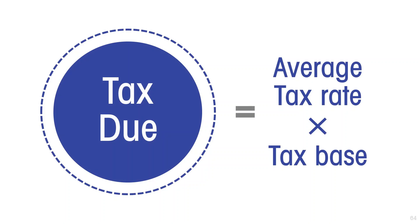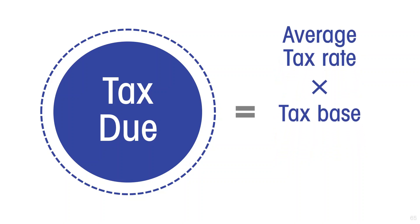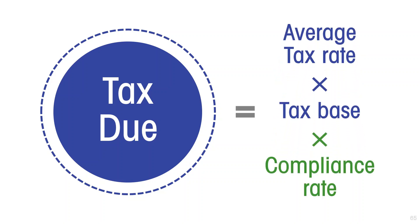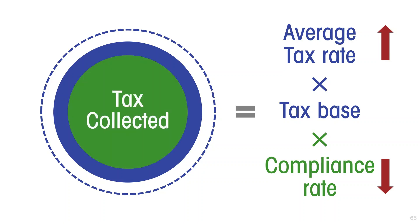But there is another problem: people who evade the tax actually continue to engage in the activity but evade remitting the tax that is due to the tax authorities. So the amount of tax that the authorities receive is not simply the product of the tax rate and the tax base — it is also affected by the rate of compliance with the tax. When the tax rate goes up, it encourages more people to try to evade the responsibility and hide that they have engaged in the activity. The compliance rate goes down as the tax rate goes up, so the amount of tax collected ends up being less than the amount legally due.